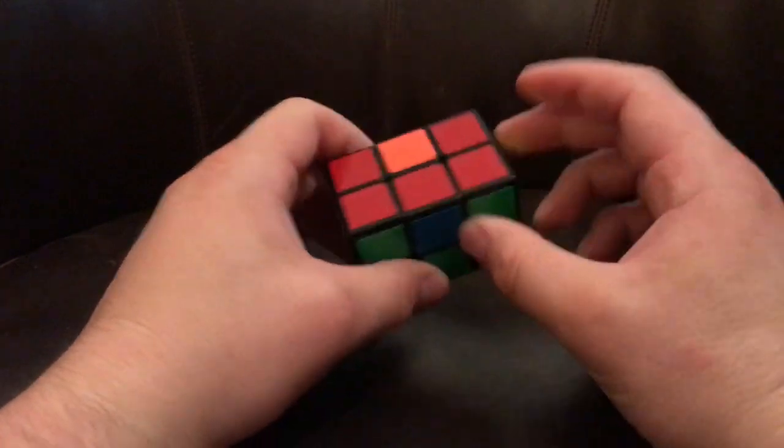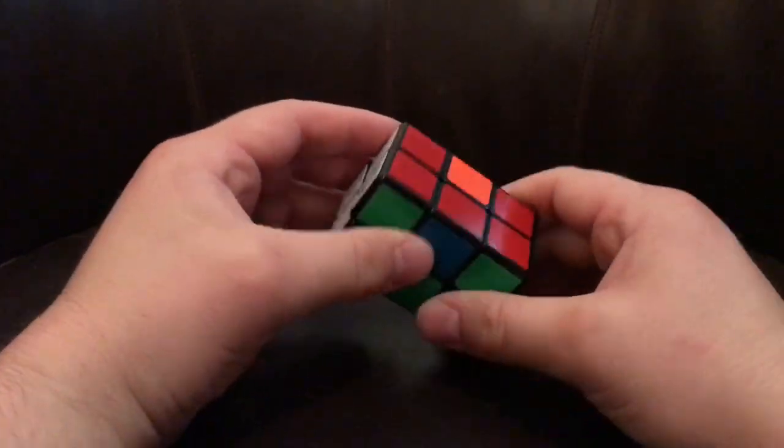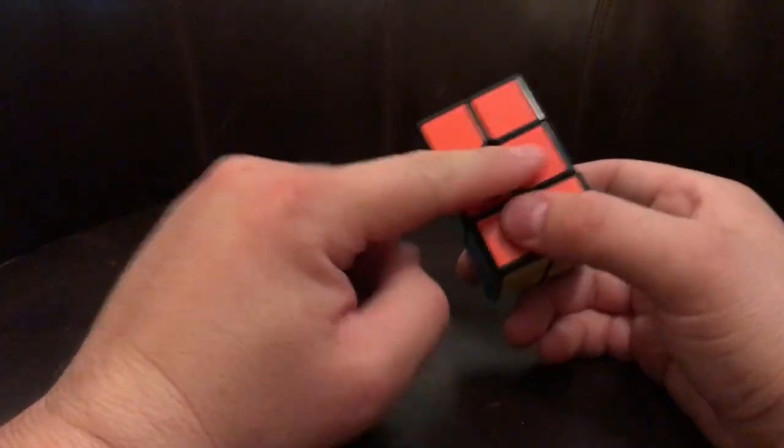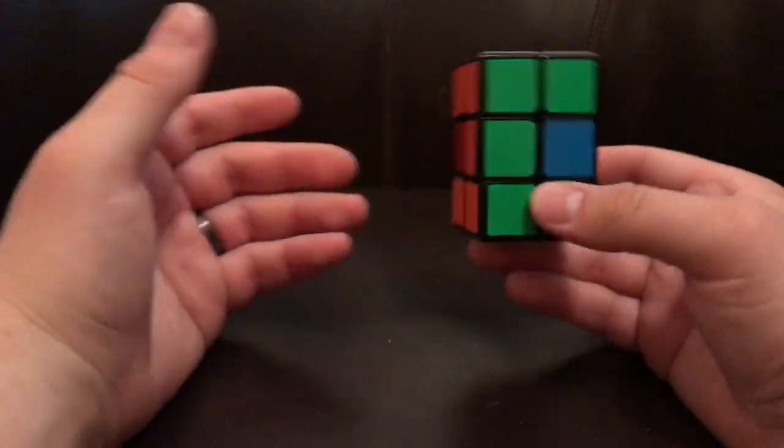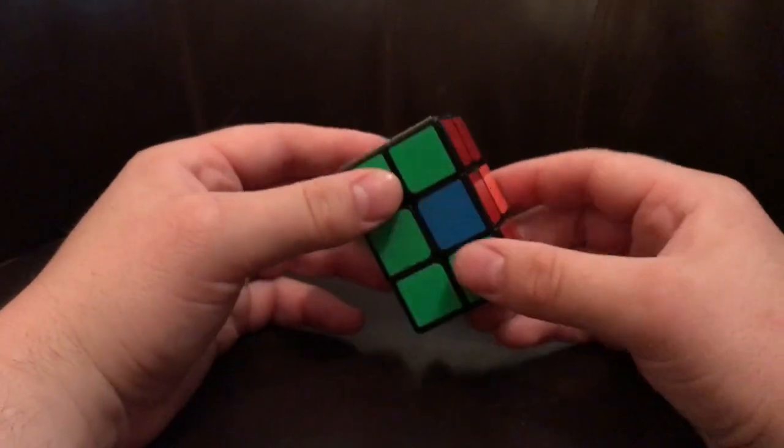So now that you have the top and the bottom completely solved, you're going to want to solve this middle piece. In some cases, you'll already have a solved bar along the center. In this case, I don't. So you're going to want to kind of make those edges work.